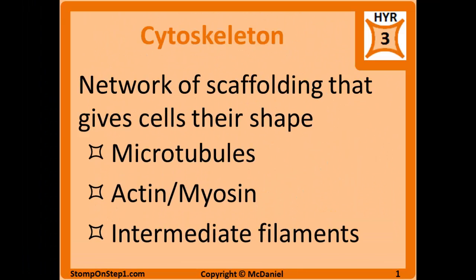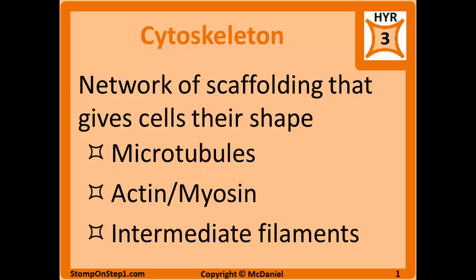The cytoskeleton is a network of scaffolding that mainly helps give cells their shape and support. Three main types: microtubules, actin and myosin, and intermediate filaments. Microtubules are the most important because they have clinical implications. Actin and myosin is also important, but mainly for muscle contraction, which we'll cover in the muscle section.